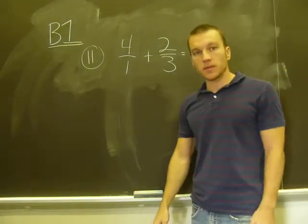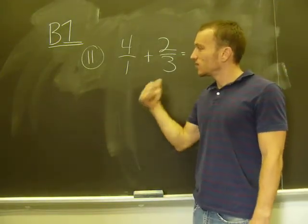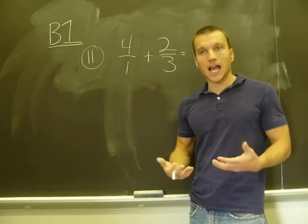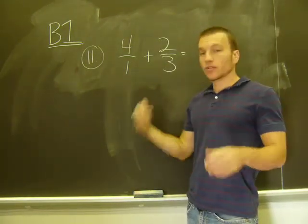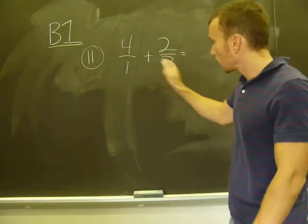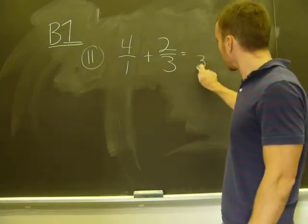Okay. So once I do that, this one's probably really not that bad because the two denominators are one and three. I need a common denominator. Well, the least, the smallest number that one and three both go into is three. Right? One will go into any number. Three will go into itself.